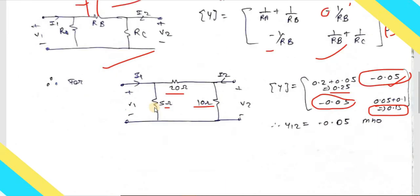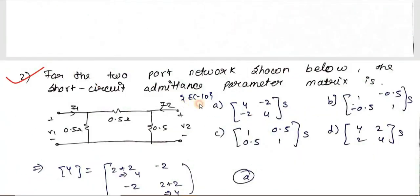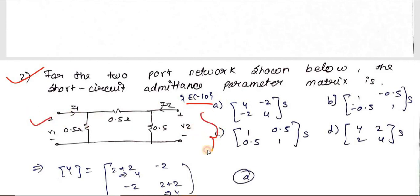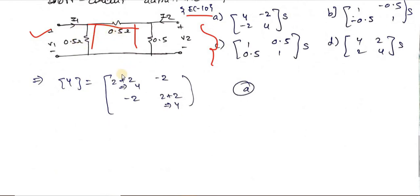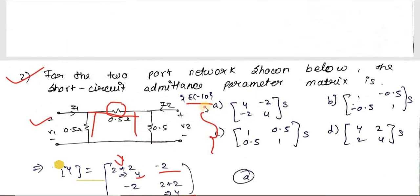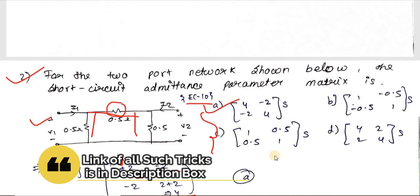You can clearly see that Y12 = −0.05, confirming the answer. Now let's apply this trick to a second sum from EC 2010: find the short-circuit admittance parameter matrix for the given two-port network. The network is again a pi-network, so: Y11 = 1/0.5 + 1/0.5 = 2 + 2 = 4, Y12 = −1/0.5 = −2, Y21 = −2, Y22 = 1/0.5 + 1/0.5 = 4.